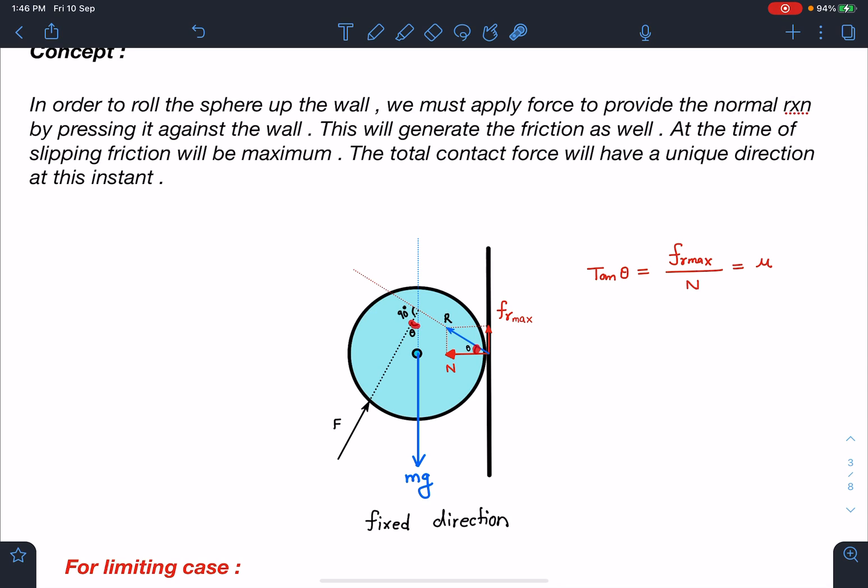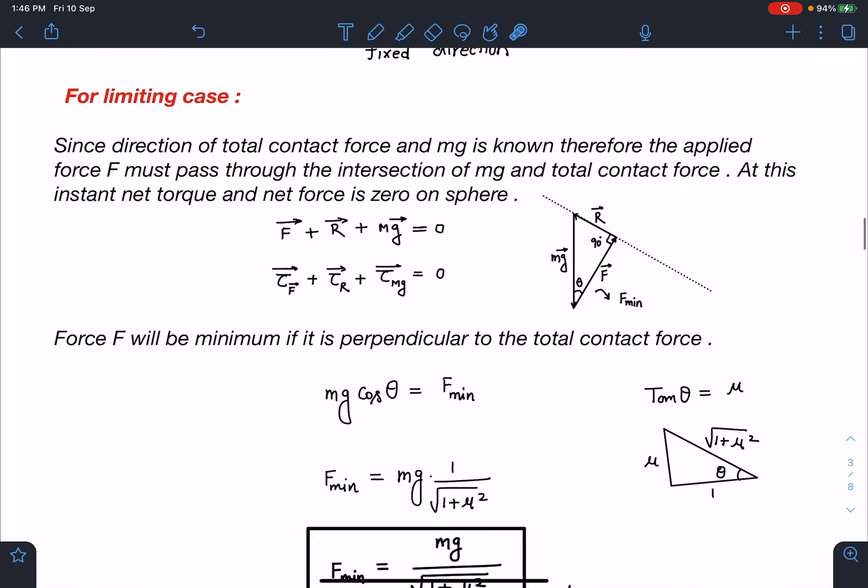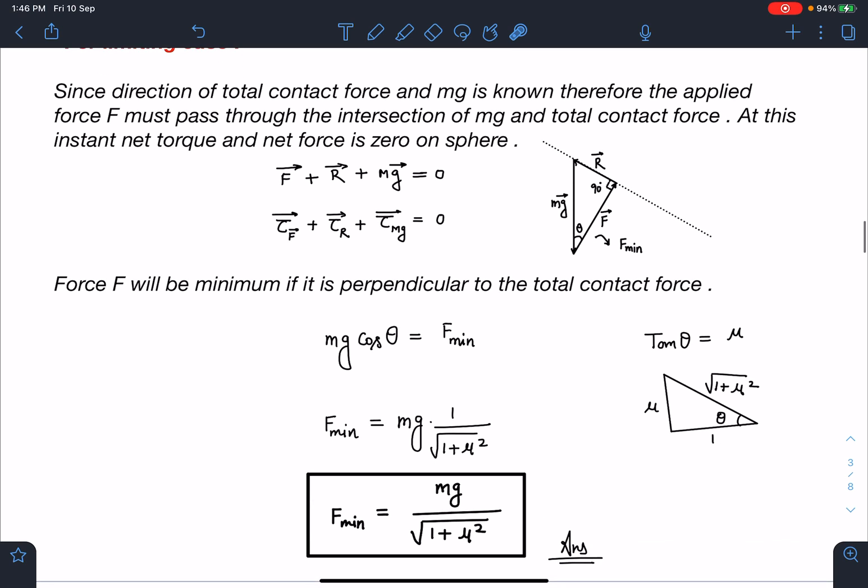So in this diagram also, f is making angle of theta from the vertical. Now we can very easily write that for minimum value, force f will be perpendicular to the total contact force. So cos theta is equal to f minimum divided by mg. We can write in this vector triangle. So f minimum value will directly get mg cos theta. Cos theta is 1 by root of 1 plus mu square. So f minimum is mg by root of 1 plus mu square. This is going to be the final answer for this problem.